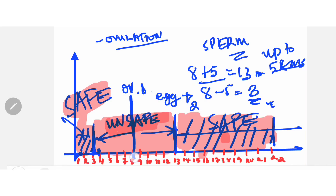From day 5 up to day 8, you're already in the unsafe window. That is one of the problems of having such a short cycle — there's a very small margin, making it very tough to rely solely on this method to prevent pregnancy. You should make sure to use other methods, such as emergency contraceptive pills, to prevent pregnancy if you don't want to conceive.